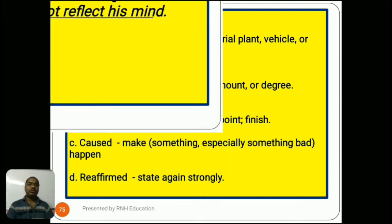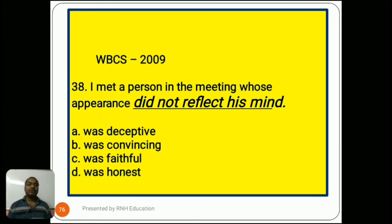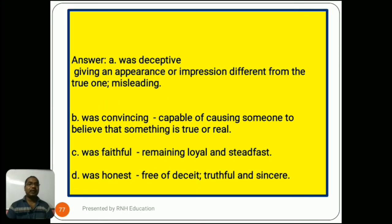Question number 38, from 2009: 'I met a person in the meeting whose appearance did not reflect his mind.' Options are A) was deceptive, B) was convincing, C) was faithful, D) was honest. The answer is A) was deceptive, meaning giving an appearance or impression different from the true one — misleading. Option B, convincing, means capable of causing someone to believe something is true. Option C, faithful, means remaining loyal and steadfast. Option D, honest, means free of deceit, truthful and sincere.